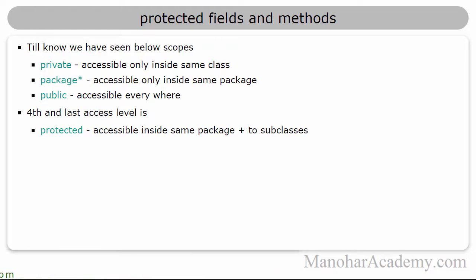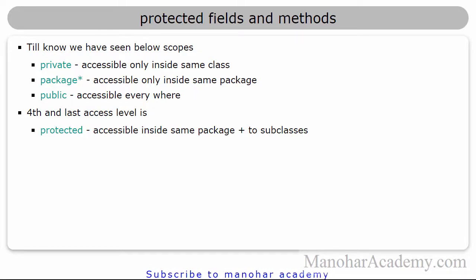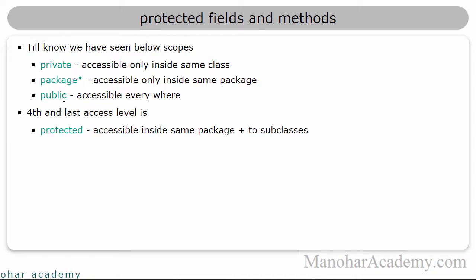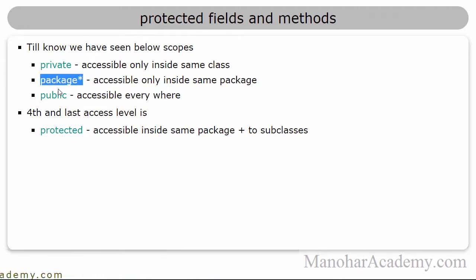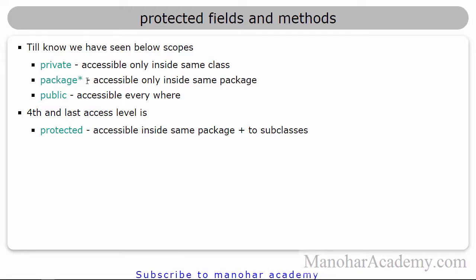Till now, we have seen three scopes: private, package, and public. Whenever we add the keyword private to a method or field, they can be accessed only inside the class in which they are defined. If we tag them with public, they can be accessed from anywhere. But if we don't tag them with private or public, by default, without any keyword, they become package scoped and they will be accessible inside the same package — from the class in which they are defined or any other class in the same package. For that reason, they are called package scoped fields and package scoped methods.